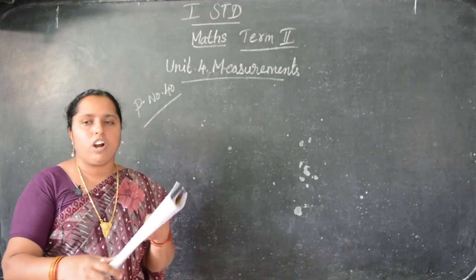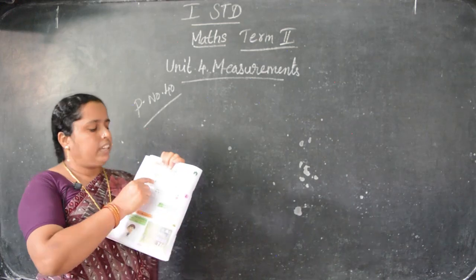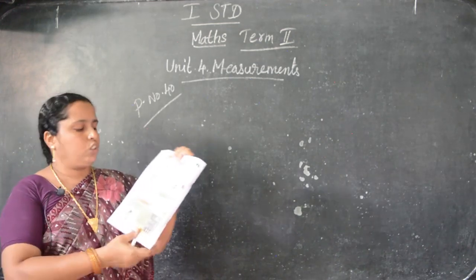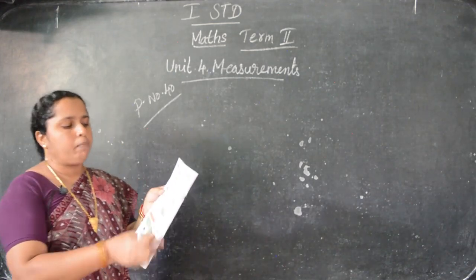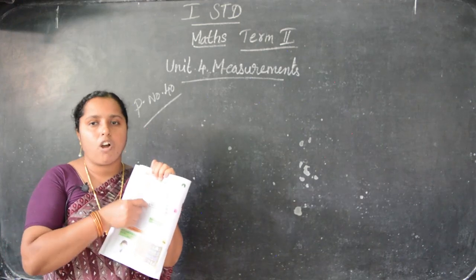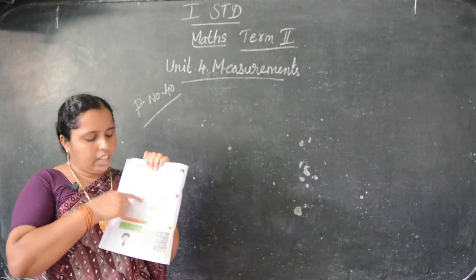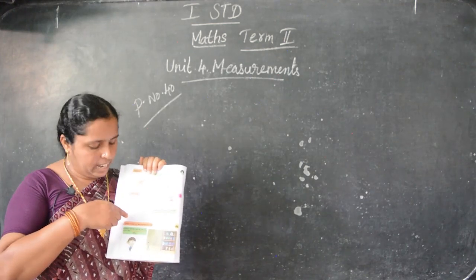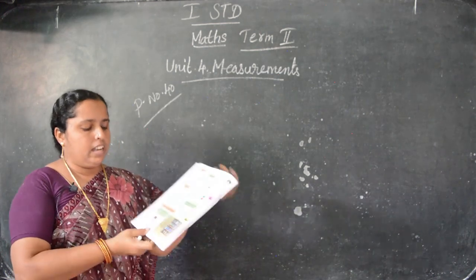Next: tall and short. Tall one and shorter one. Here see, giraffe is a tall animal. Deer is a short animal. Color the taller building with green color and the shorter building with red color. So you have to color the taller building in green color. This one is the taller building. So this one you have to color in green color. And this is the shorter building - you have to color this one in red color.